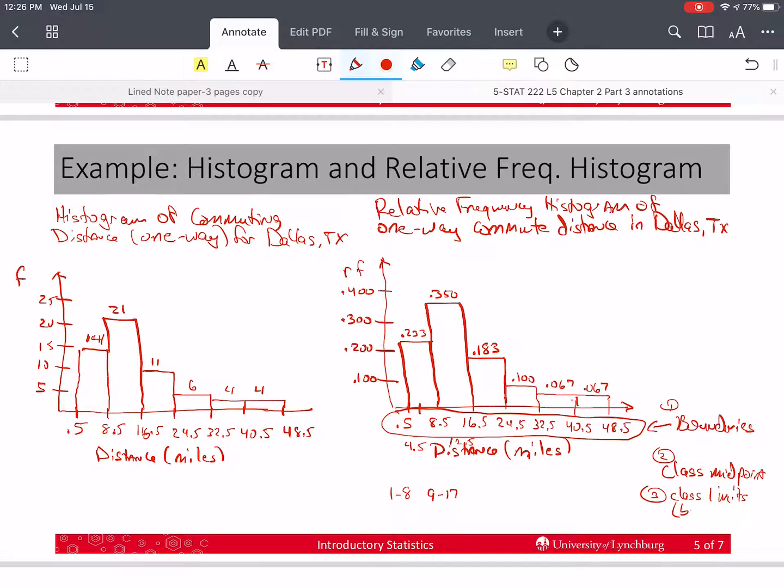So those are the three different ways you can label that axis. So if the problem doesn't tell you which way to do it, then you're welcome to use any one of those three methods. It's up to you.